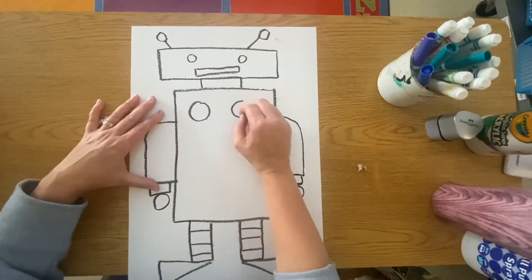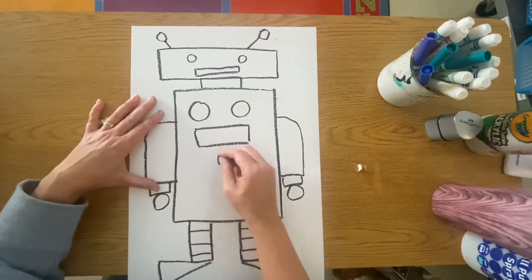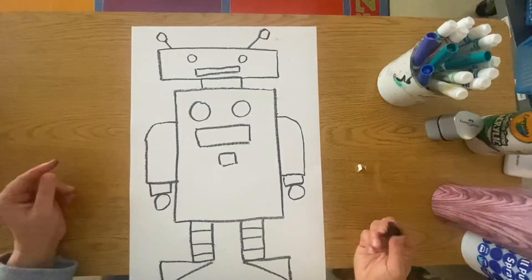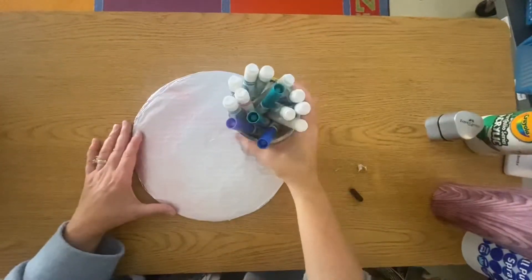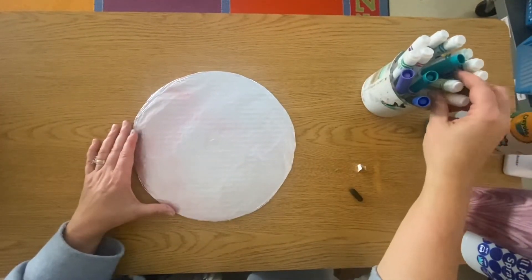Add some shapes of your choice for your robot's buttons. For the next step, for the printmaking part of our project, you will need your round printing plate.